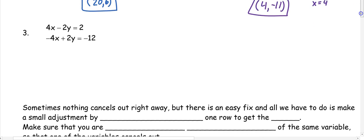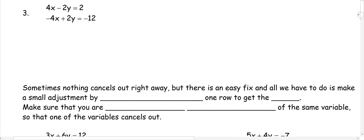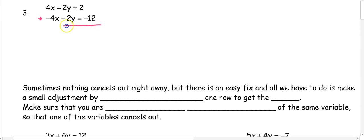Now in number 3, when I go to add, notice that I have opposite coefficients for both my x and my y. So both of them cancel out, and that leaves me with 0 equals negative 10. Now, 0 cannot equal negative 10 — that's not a true statement. So because of that, we're going to say that this is one of our special cases, which is no solution.